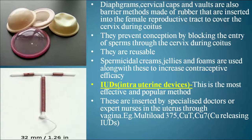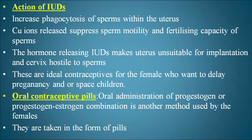The most important and popular contraceptive method is the IUD (Intrauterine Device), inserted by specialized doctors or nurses into the uterus through the vagina. Examples of IUDs include Multi-load 375, Copper-T, Copper-7, and Progestasert. IUDs increase phagocytosis of sperms within the uterus, copper ions released suppress sperm motility and fertilizing capacity, and hormone-releasing IUDs make the uterus unsuitable for implantation and the cervix hostile to sperms. IUDs are ideal for females who want to delay or space pregnancies.